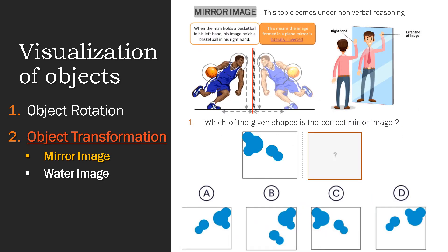Let's talk about object transformation. It is mentally moving your viewpoint while the object remains fixed. We have two categories: mirror image and water image, under which the questions can be addressed. Now, when the mirror is placed on the right side or left side of the image, the top and bottom part of the image remains the same, while the left and right sides will be interchanged in the mirror image.